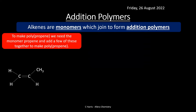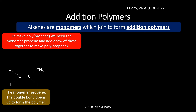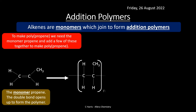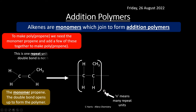To make a polymer like polypropene, we need the monomer propene and we join a few of these together. The monomer propene has a double bond, and it's that double bond that opens up to form the polymer chain. You can see we've opened that double bond, and there's an 'n' on the side — that means repeat units. This is one repeat unit that repeats over and over to form your polymer. Notice the double bond isn't there anymore.